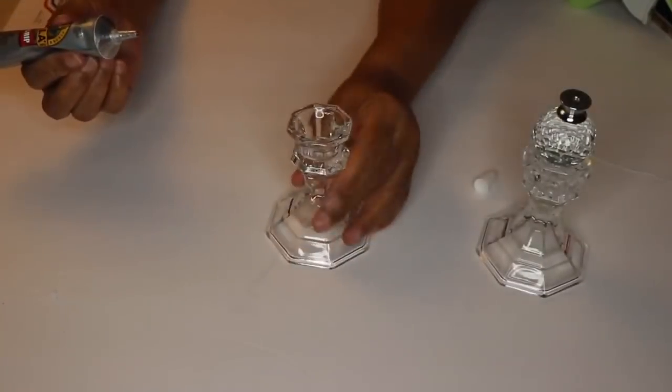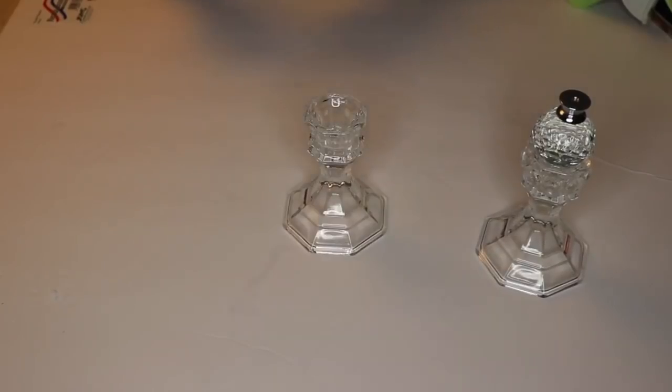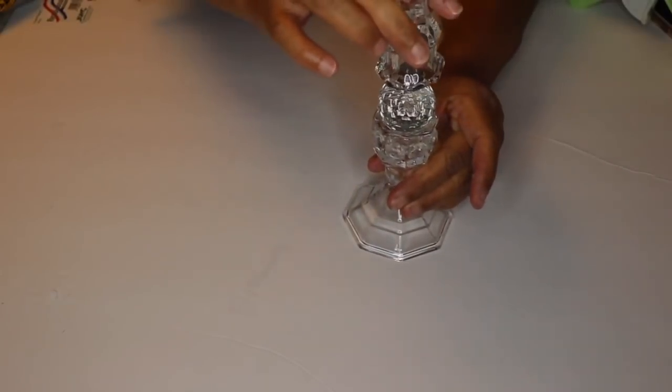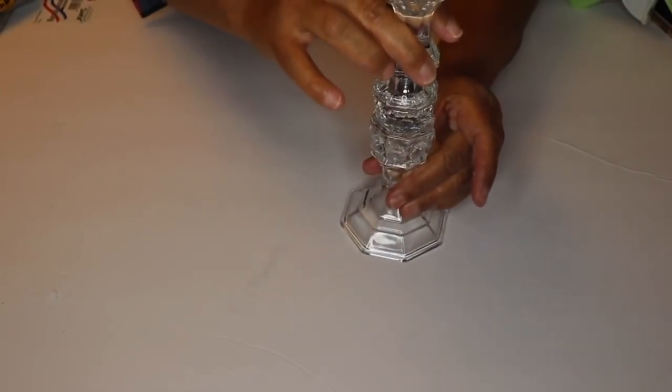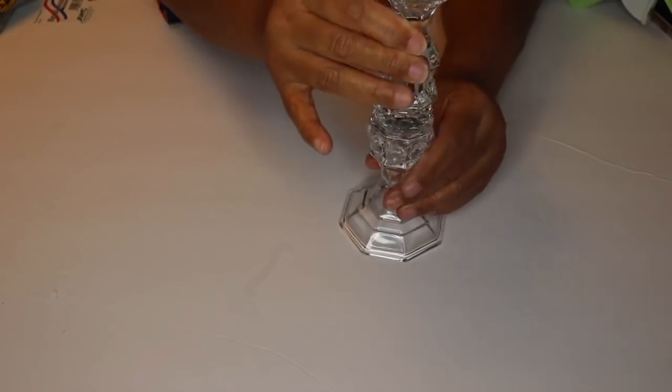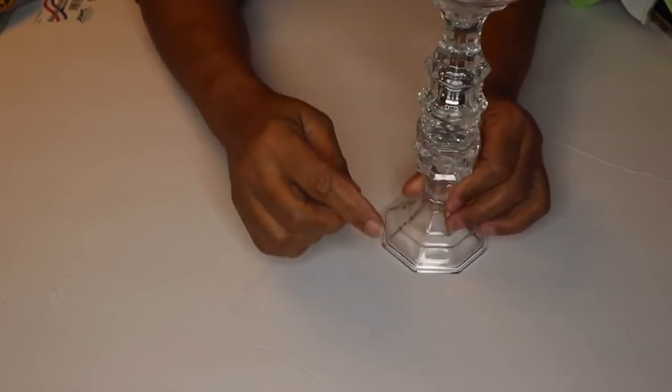So next I added some glue to my second candle holder and I placed the glue just inside the rim of the top of the candle holder to make sure that I had a really good bond between the two. I then placed the candle holder on top of the knob, made sure that it was level and then I put it aside to set up overnight.